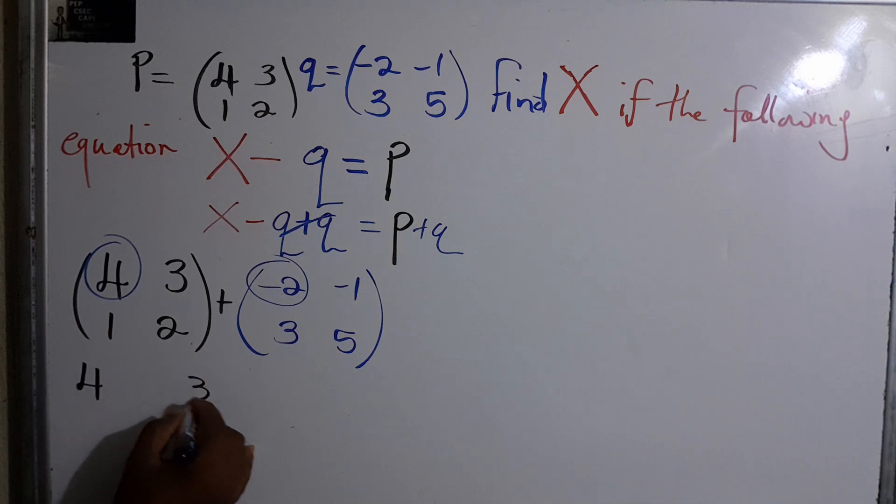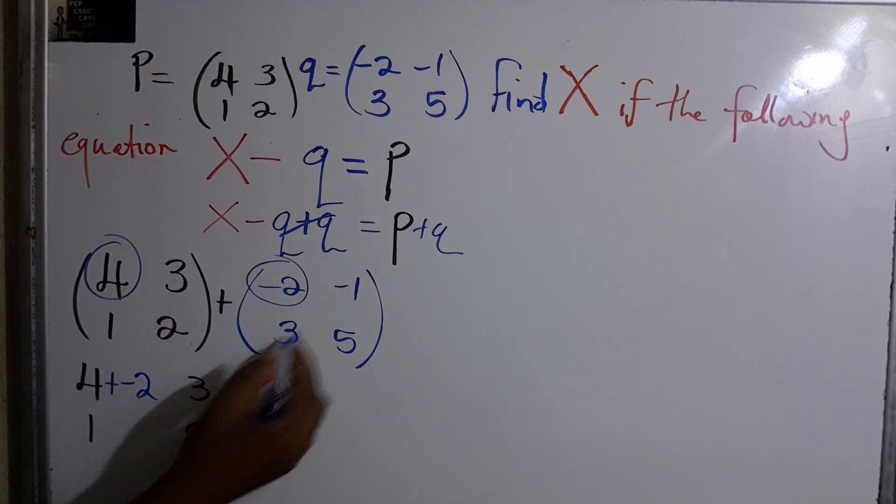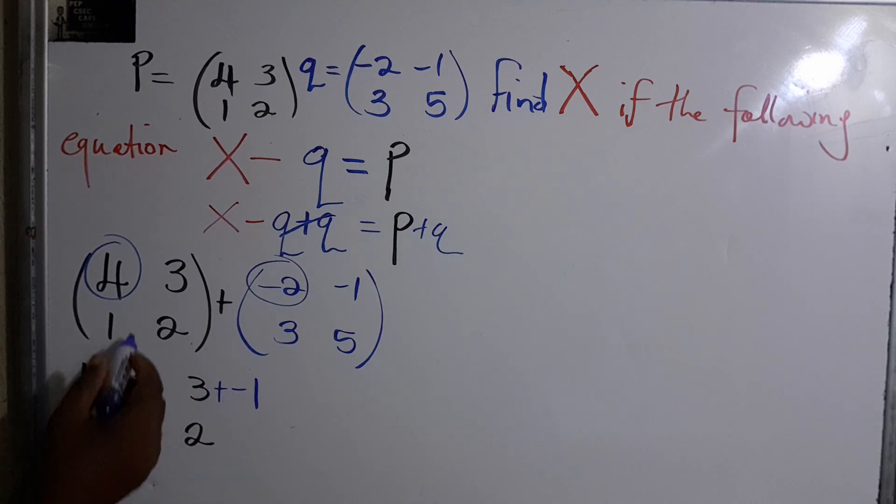We just match it with this, so we have plus -2. 3 goes with -1, so plus -1. 1 corresponds with 3. Remember it's just the same position. 2 goes with 5.